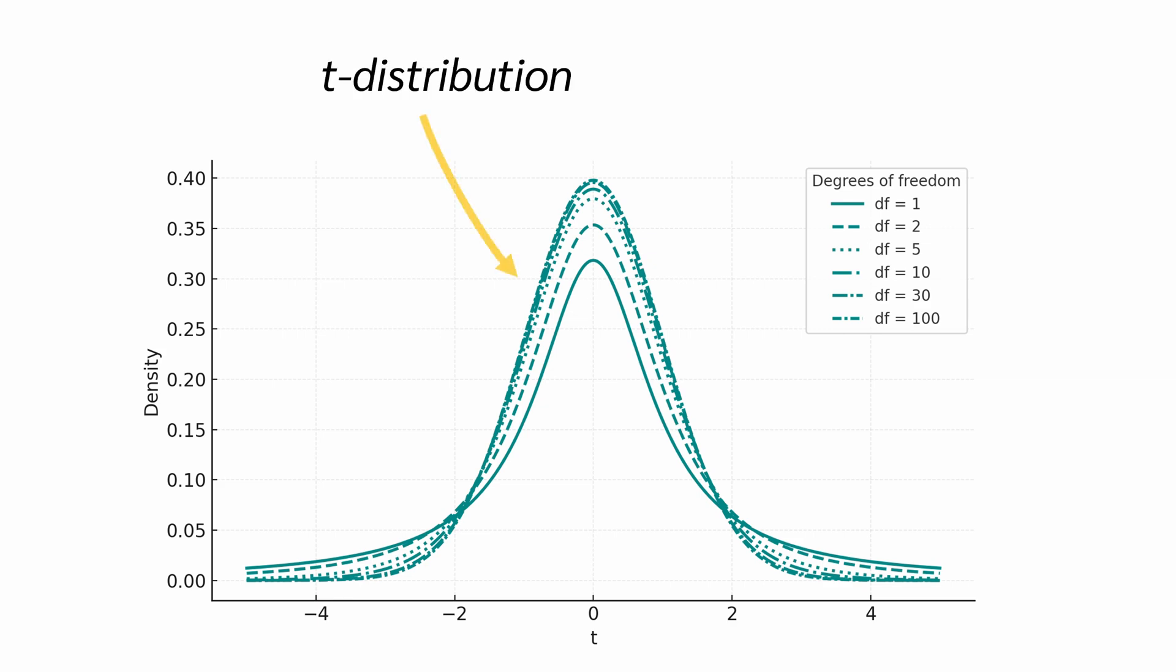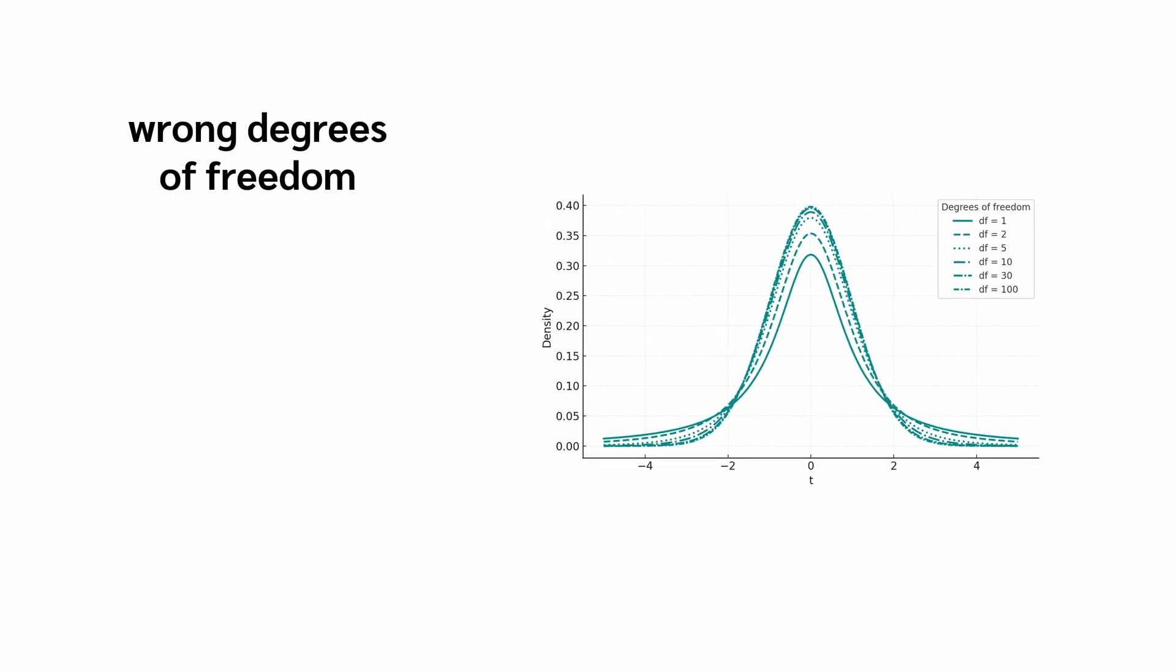For example, this is the t-distribution for different degrees of freedom. If you use the wrong degrees of freedom, you get the wrong curve, the wrong p-value and possibly the wrong conclusion.